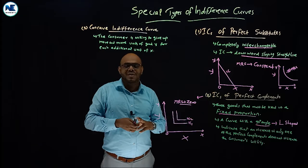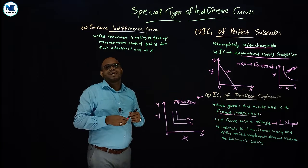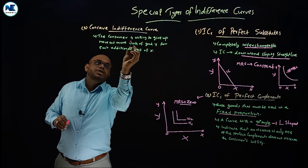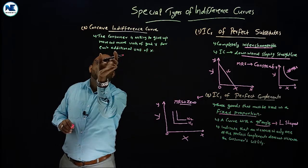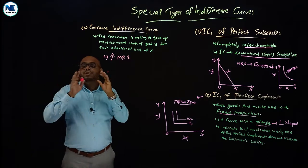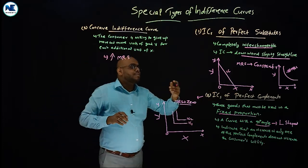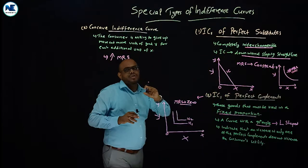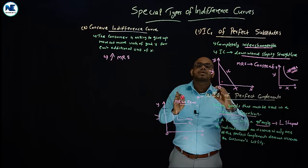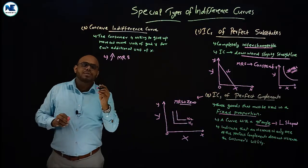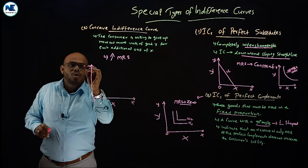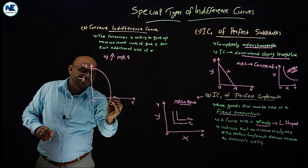Now, the concave indifference curve. This is a special type where the consumer is willing to give up more and more units of good Y for each additional unit of good X — that is, increasing Marginal Rate of Substitution. This is opposite to the usual diminishing Marginal Rate of Substitution. This is the concave shape of the indifference curve, with good X on one axis and good Y on the other.